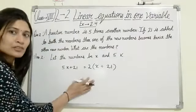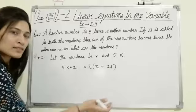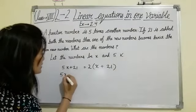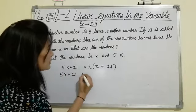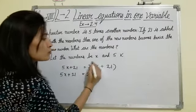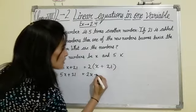Then we have to solve this equation, we will get our answer. 5x plus 21 equals to 2 multiplied by x is 2x, and 2 multiplied by 21 is 42.